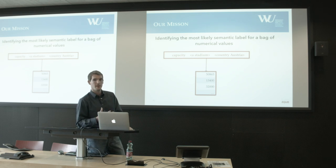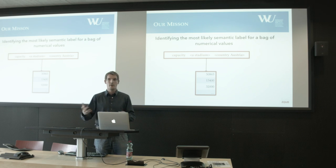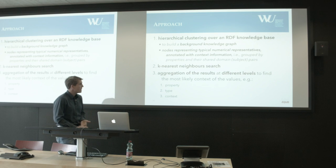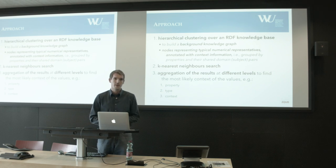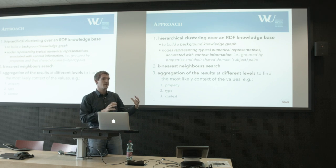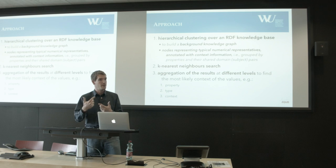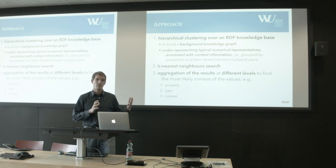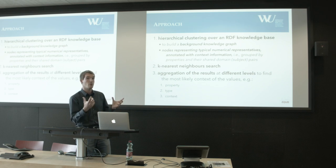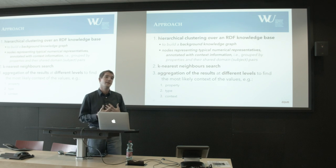How we address this problem is in three steps. First, we apply hierarchical clustering over an RDF knowledge base to derive a hierarchy of nodes representing numerical values, annotated with the property, the types of entities, and contextual PO pairs. Then we apply k-nearest neighbor search for a given set of numbers to find the most closely matching numerical representations. Finally, we do aggregation over resources at different levels to figure out the most likely interpretation.